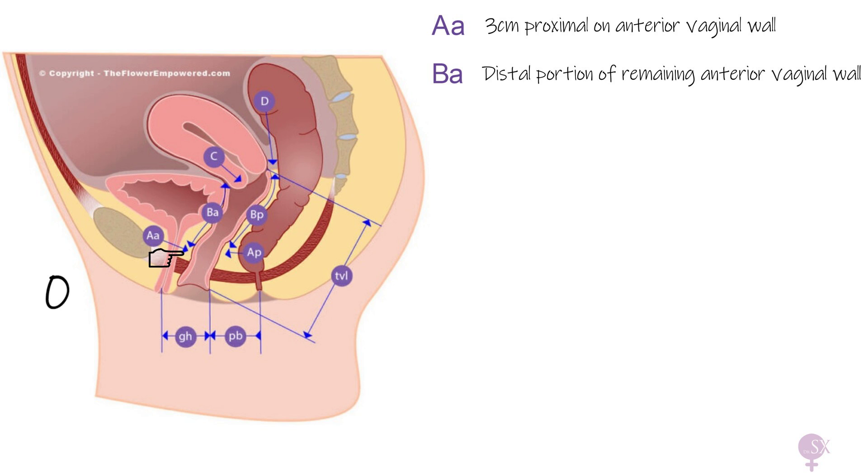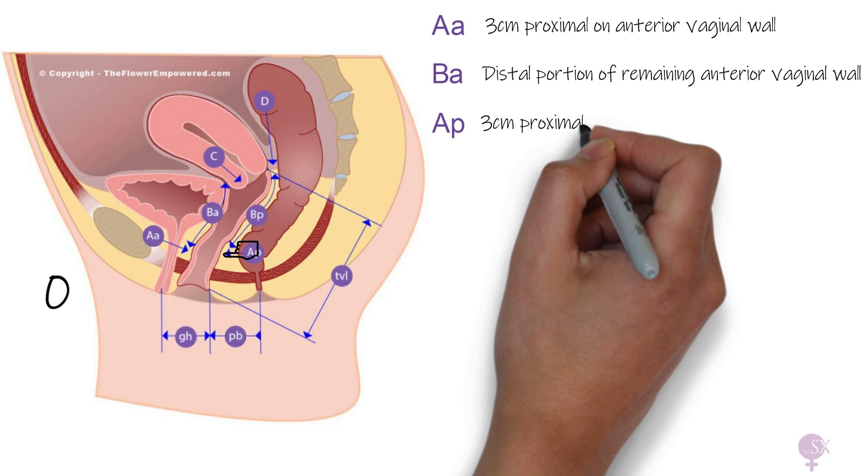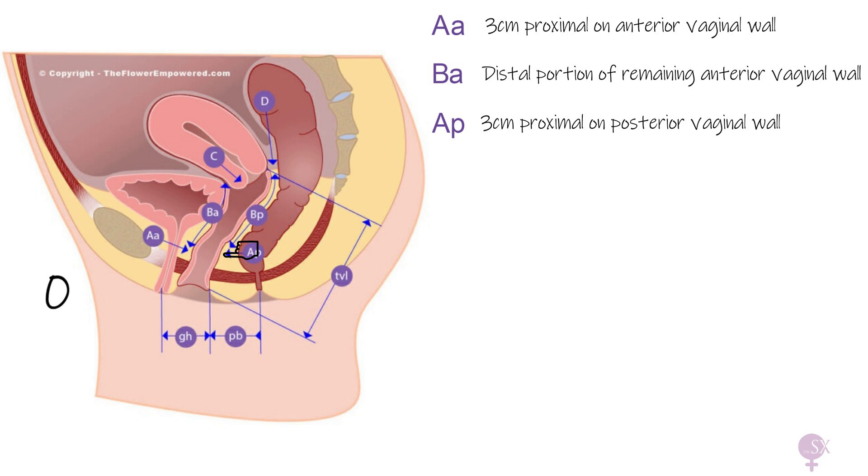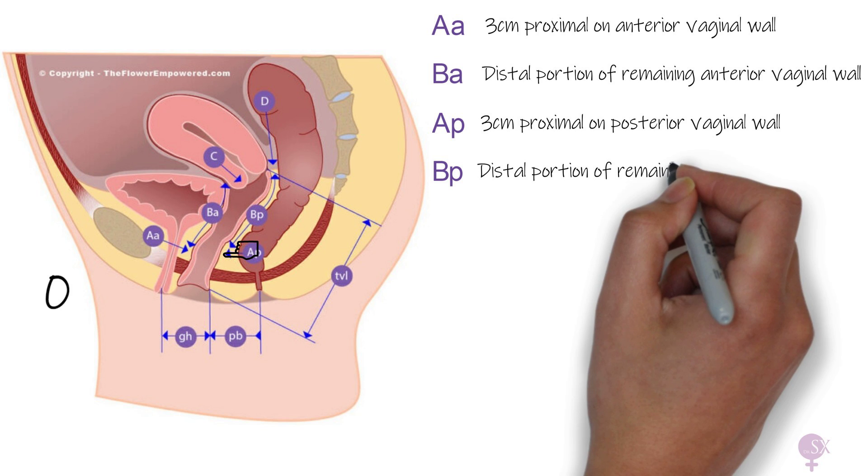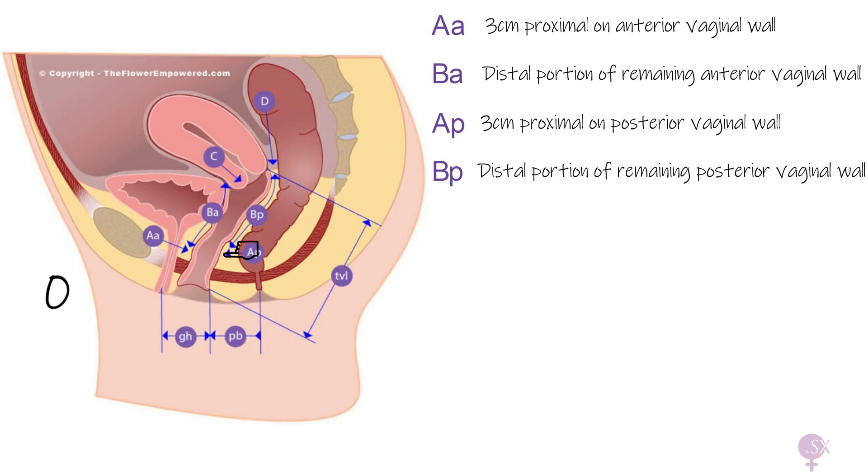Similarly, Ap refers to a point on the posterior vaginal wall three centimeters proximal to the hymen, ranging from minus three to plus three. Bp refers to the distal portion of the remaining posterior vaginal wall, ranging from minus three to plus seven.